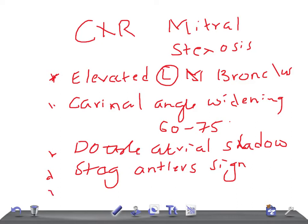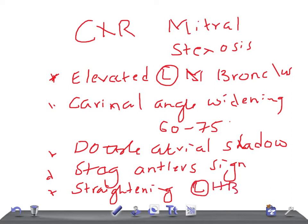Another very important finding is the straightening of the left heart border, along with a prominent left atrial appendage. A prominent left atrial appendage is very pathognomonic of rheumatic heart disease. If you do a barium swallow, you will also see impressions on the esophagus.